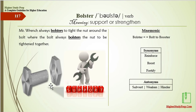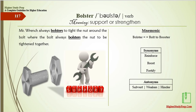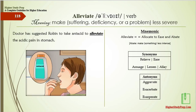The synonyms of bolster are reinforce, boost, or fortify, and the antonyms are subvert, weaken, or hinder. Alleviate means to make a problem less severe. A doctor has suggested Robin take an antacid to alleviate the acidic pain in his stomach. Mnemonic: alleviate — allocate to age and abate, where abate means to make something less intense.